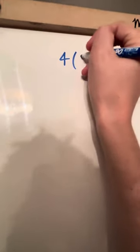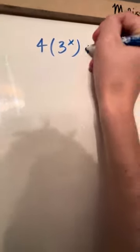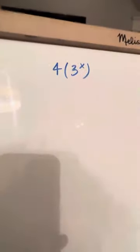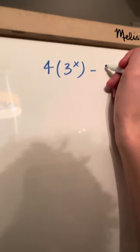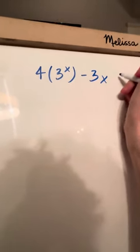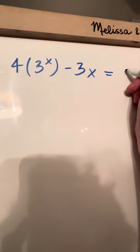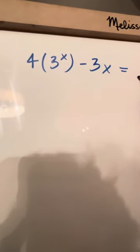The equation we're going to solve is 4 times 3 to the power of x, minus 3x, is equal to 9.